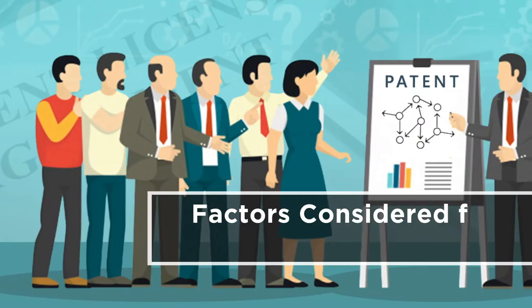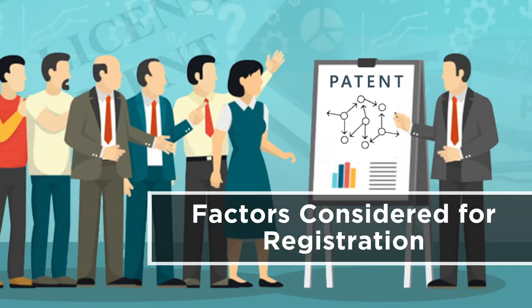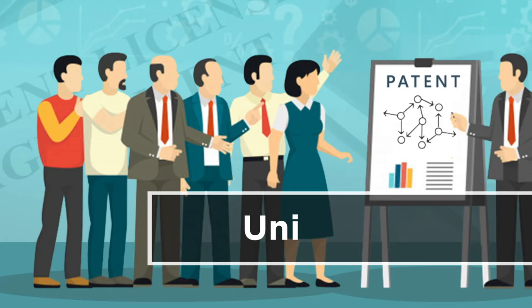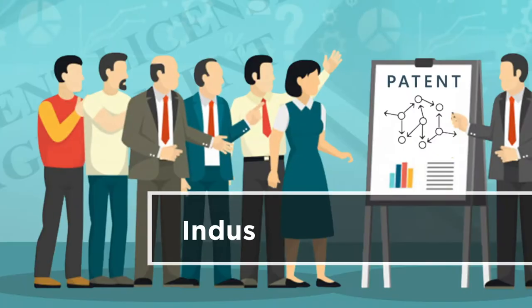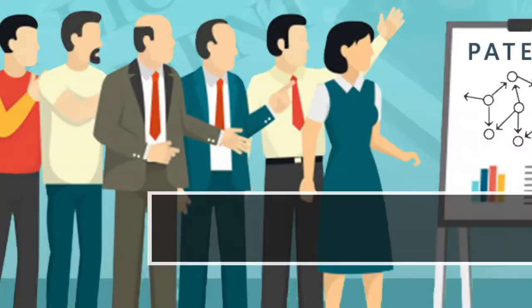There are some factors considered for registration eligibility. First, uniqueness — the invention must be of a unique nature and must not have been issued anywhere in India before. Second, industrial applicability — the invention must be capable of being used in the industry. Third, non-obviousness — the invention should not be obvious or simple in nature and must be considered by a skilled and experienced individual.